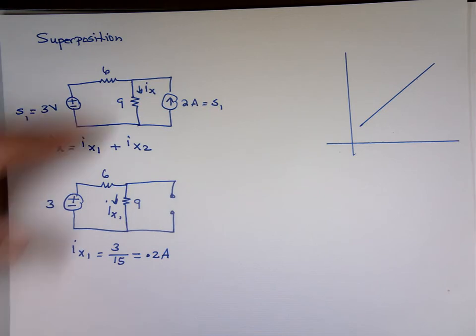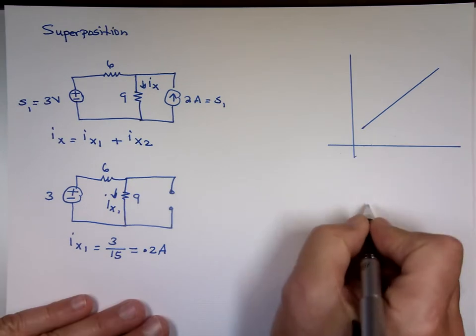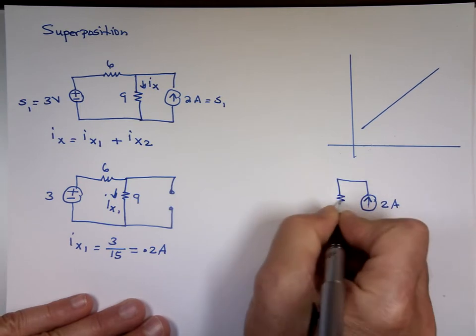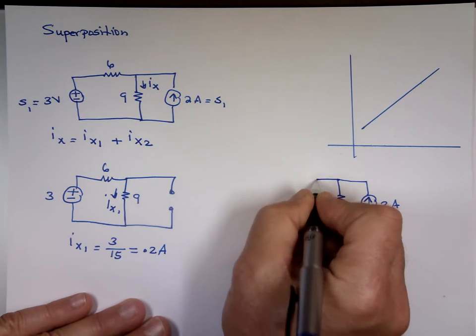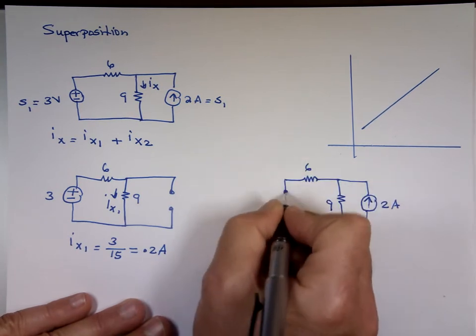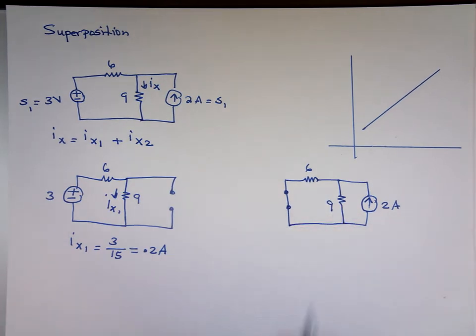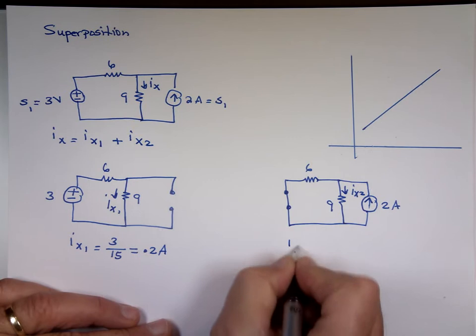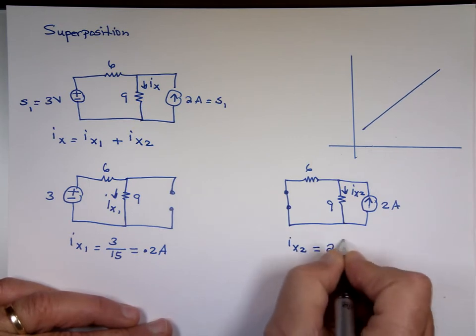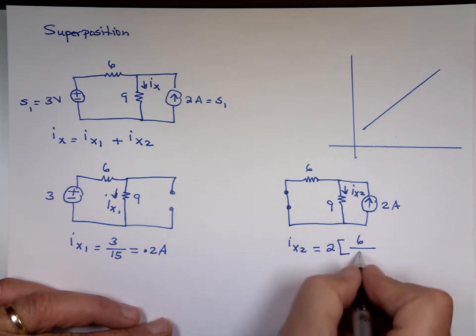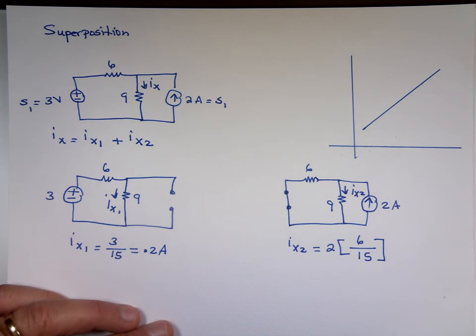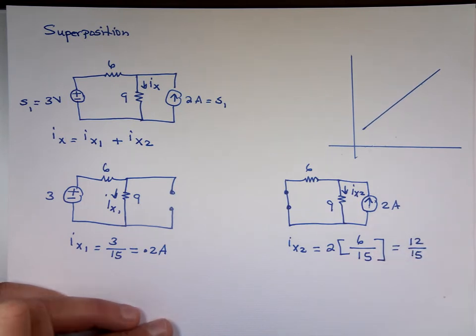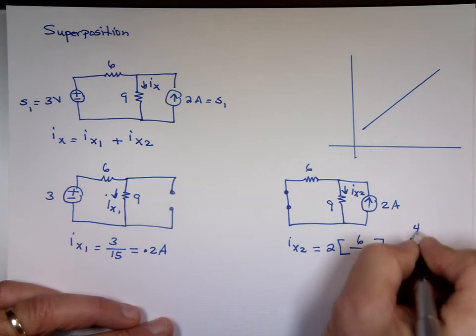Now i sub x2 is the current due to source 2, which means we have to kill the voltage source. And to kill a voltage source, you make it what? A short circuit. Notice the voltage source is gone, and this is i sub x of 2 due to source 2. I can use current division. It's going to be the source which is 2 times that resistor over the sum of both of them, 6 and 9, which is 15. 2 times 6, which is what? 12 over 15. If I divide it by 3, that's what? 4 over 5, which is 0.8.